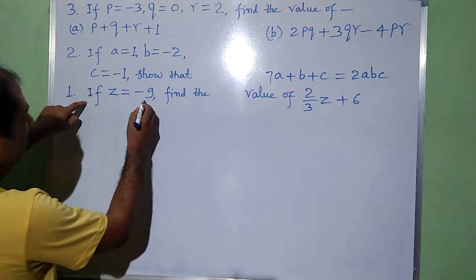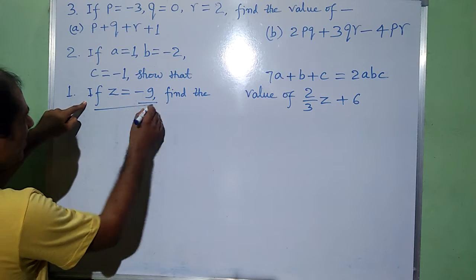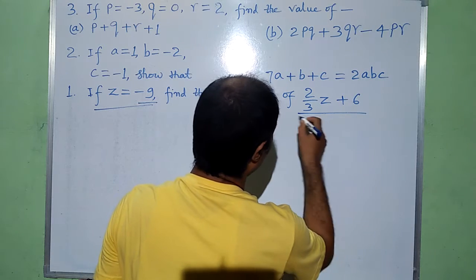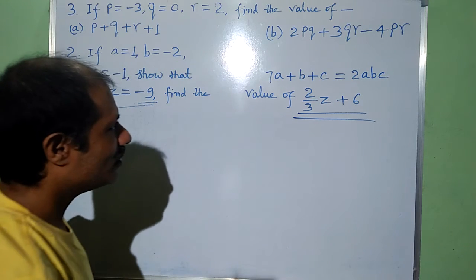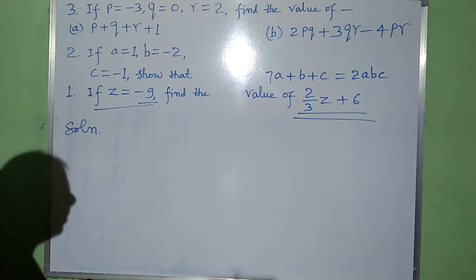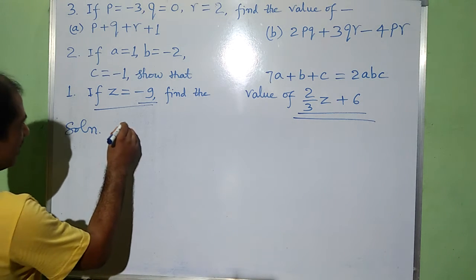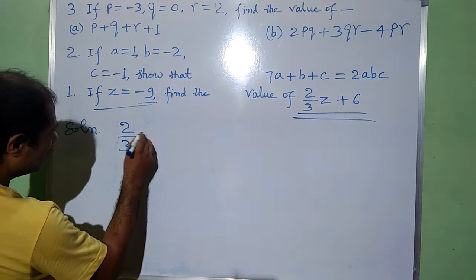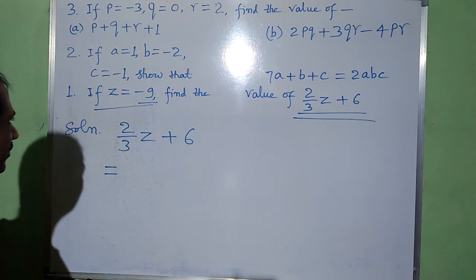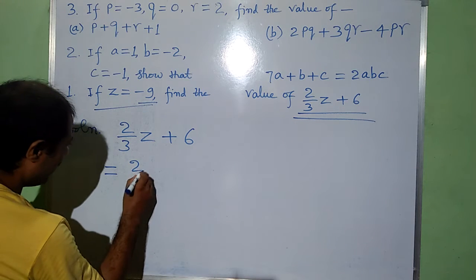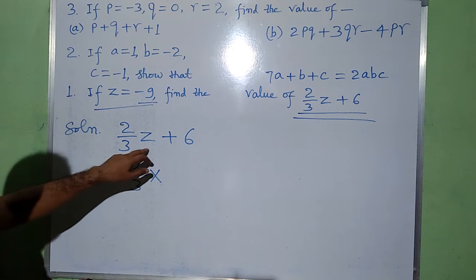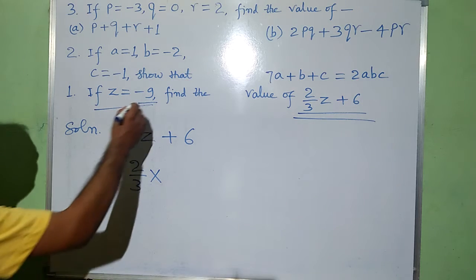If z is equal to minus 9, the value of the variable is given. Then we have to find the value of this algebraic expression: 2 by 3z plus 6. It will be solved like this. First of all, I have to write this algebraic expression that is 2 by 3z plus 6. It will be equal to 2 by 3 into this symbol, and now this z will be replaced by minus 9.